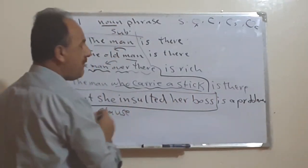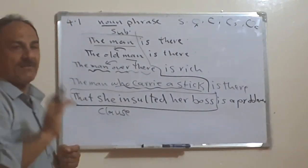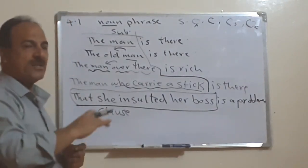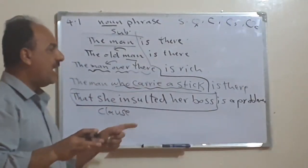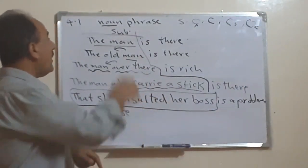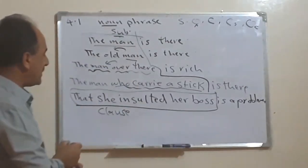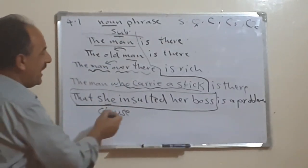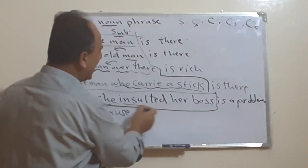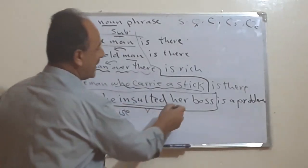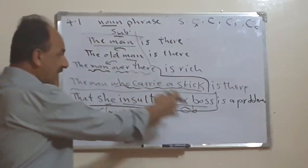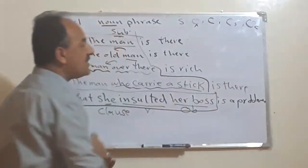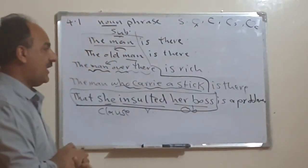And if you remember, we said a clause means to have a subject, we have a verb, we have could be complement object, all the sentence elements or most of them available. And still, all of them in the subject position. If we say this is a subject, and that she insulted, this is the verb, and her boss, this is the object. Nonetheless, all these elements were in the position of what, of the subject.